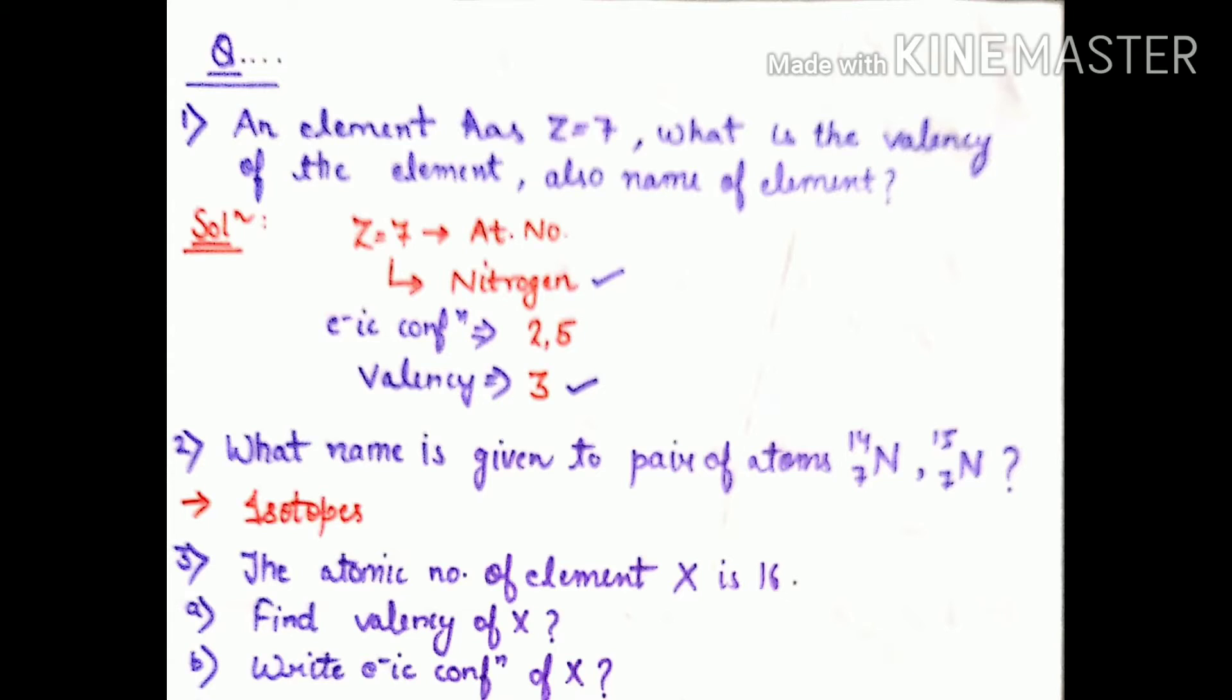The atomic number is 7. That means seven atomic number belongs to nitrogen. So the element's name will be nitrogen. Then we write the electronic configuration which will be 2,5. So in its outer shell there are 5 electrons. To complete its octet it requires three electrons, so the valency of nitrogen will be 3.